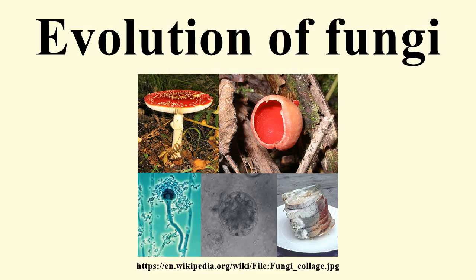Lichen-like fossils have been found in the Doushantuo formation in southern China dating back to 635 to 551 million years ago. Lichens were a component of the early terrestrial ecosystems, and the estimated age of the oldest terrestrial lichen fossil is 400 million years ago. This date corresponds to the age of the oldest known sporocarp fossil, a paleoparenomycite species found in the Rhinechert.